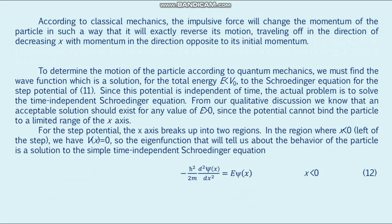According to classical mechanics, the impulsive force will exactly reverse the particle's motion, sending it off in the direction of decreasing x with momentum opposite to its initial momentum. To determine the motion according to quantum mechanics, we must find the wave function which is the solution for total energy E < V₀ of the Schrödinger equation for the step potential of formula 11. Since this potential is independent of time, we solve the time-independent Schrödinger equation. An acceptable solution should exist for any value of E > 0, since the potential cannot confine the particle to a limited range of the x-axis.